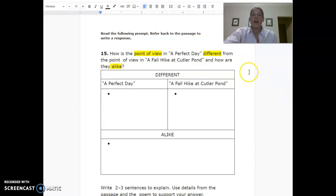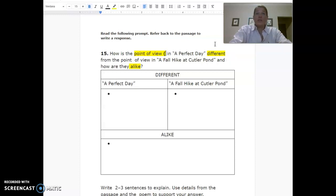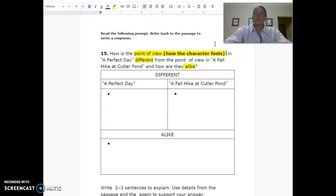Number 15 asks you to look at the points of view in A Perfect Day and A Fall Hike at Cutler Pond. What we need to make sure we understand about point of view is that in this situation, they're asking you how the character feels, basically about what they're seeing or doing and the differences.